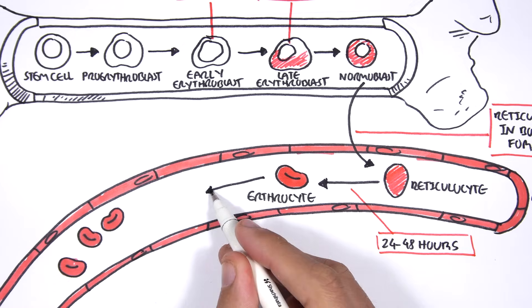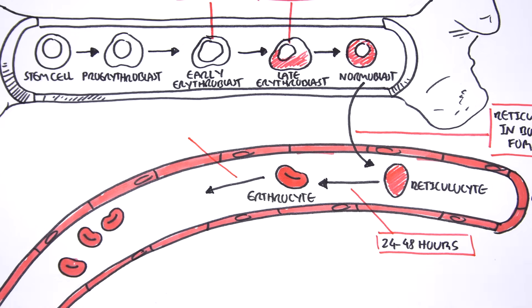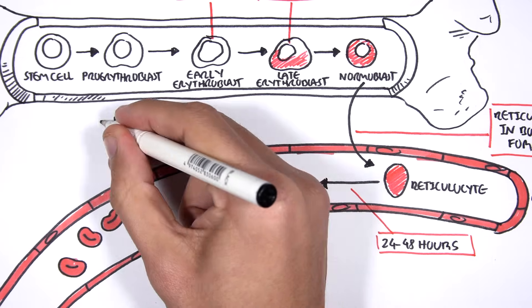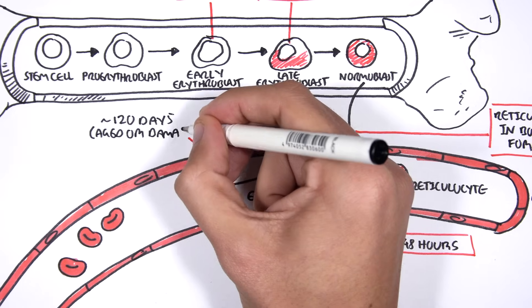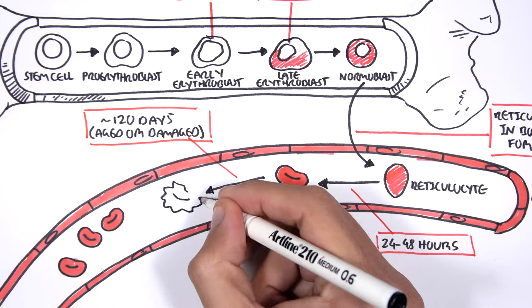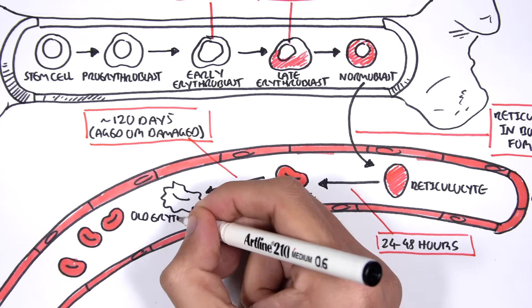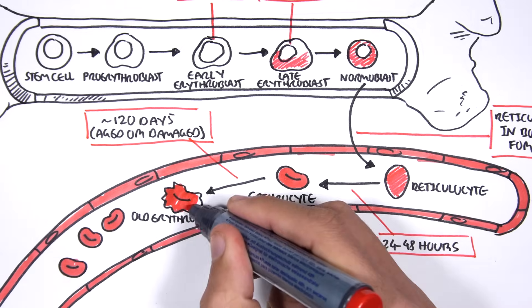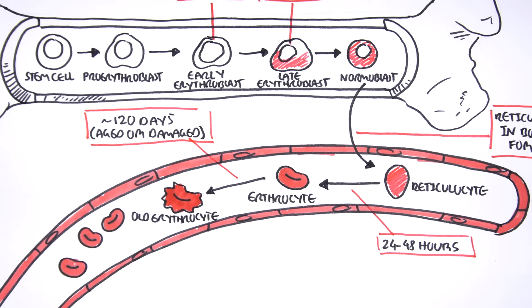But erythrocytes don't circulate in our body forever. They have a lifespan of about 120 days. When aged or damaged, they have to be removed. Red blood cell removal occurs in three main organs: the spleen, the liver, and the bone marrow.